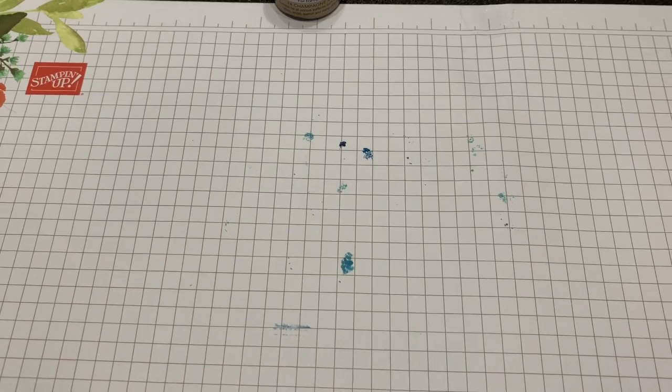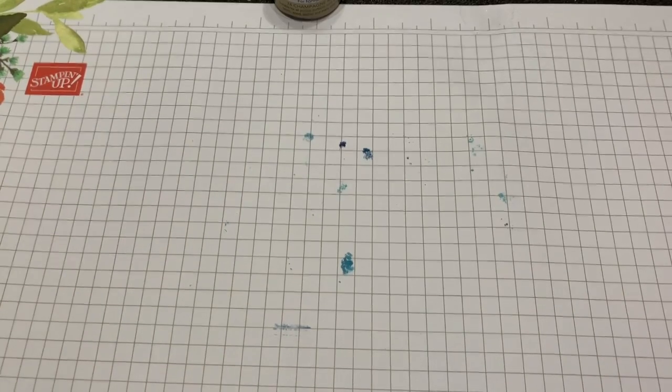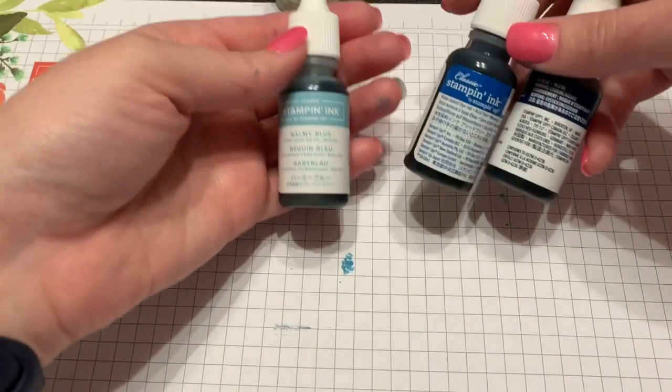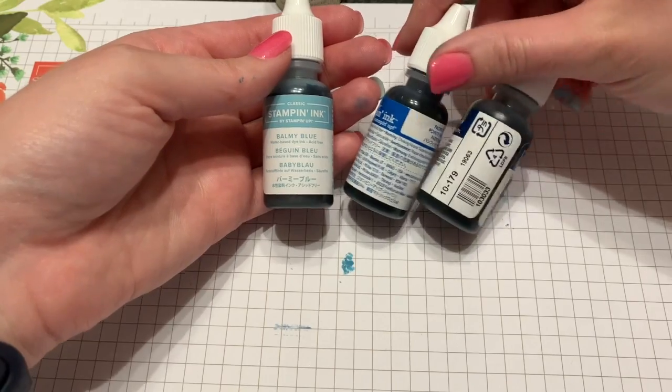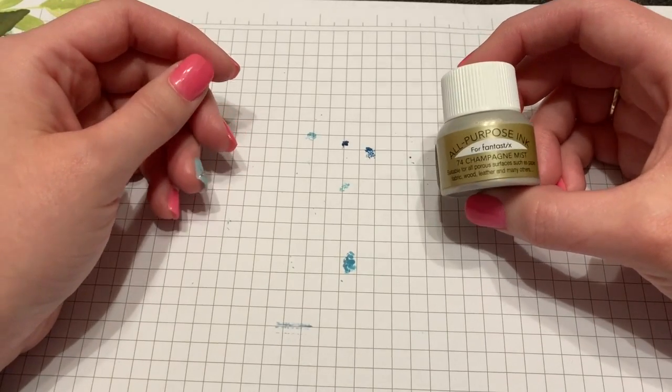You're going to need some cling wrap, saran wrap, whatever you call it in your house. You're going to need your reinker colors: I used Balmy Blue, Pacific Point, and Night of Navy. Then you're also going to need some shimmer paint, and I'm using the Champagne Mist.